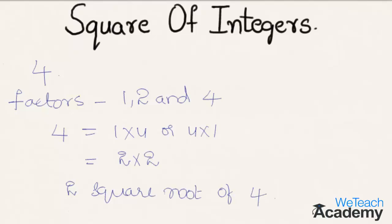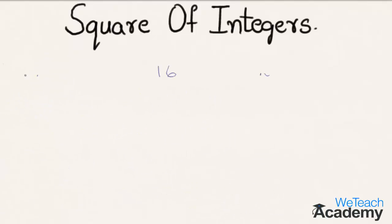Let us consider a few more examples and find the square of integers. The given number is 9. Square of 9, that is 9 into 9, equals 81. So we can say that square root of 81 is 9, and square of the number 9 is 81.